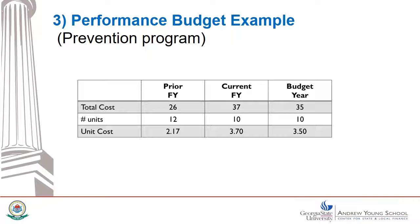Per unit costs are simply the total cost divided by the number of units. It would help if there were comparable per unit costs derived across many different laboratories around the country. Alternatively, perhaps there are private industry standards that could be used for comparison. Such comparisons would provide a way to assess the value of the calculated amounts. Otherwise, these numbers may generate interesting budget review questions but not a solid basis to drive budget decisions.